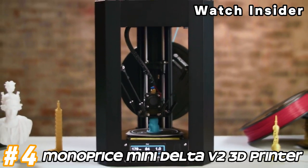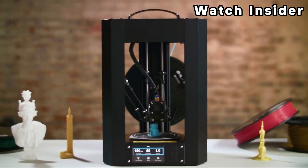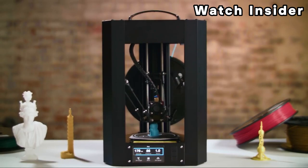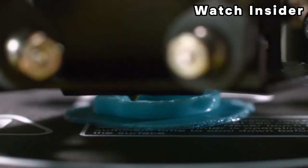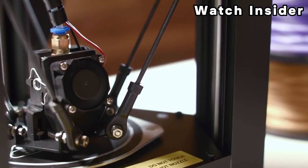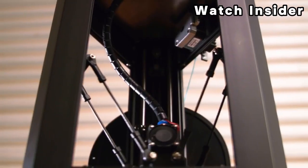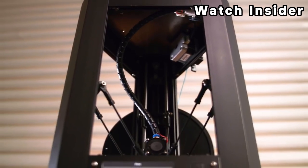Number four: Monoprice Mini Delta V2 3D Printer. The Monoprice Mini Delta V2 is known for its small footprint, making it suitable for desktop use in environments with limited space. It utilizes a delta-style design characterized by three arms moving independently to control the position of the print head. This configuration allows for fast and precise movements during printing.